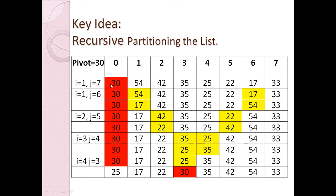In the QuickSort algorithm, we make the first element a pivot element. Pivot means a point around which the whole work will be done. So 30 becomes the pivot element — the first element at array location zero. I have marked it with red.